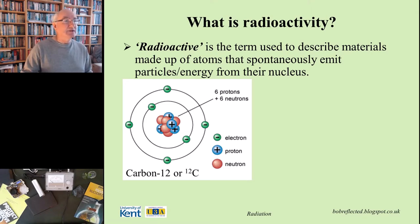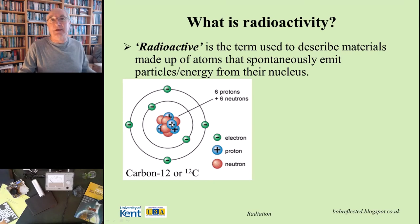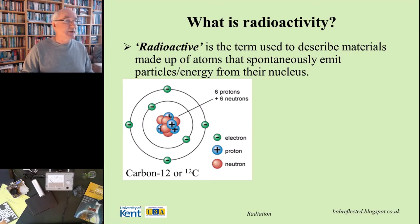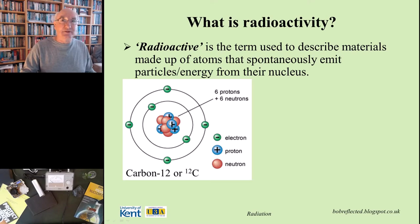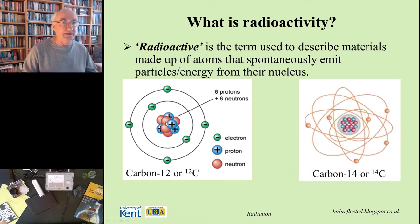We can change the number of neutrons in a nucleus without that atom becoming another element. It would remain carbon for as long as the number of protons stays at six. The number of neutrons can go higher or lower — it would still be carbon, just a different form of carbon. And that's what we need to look at now.